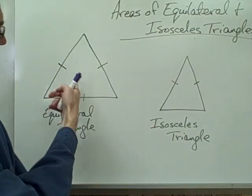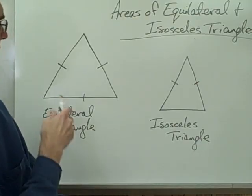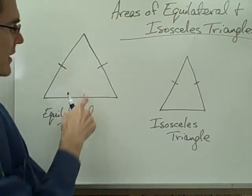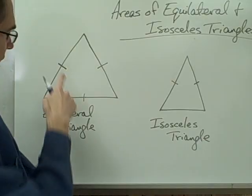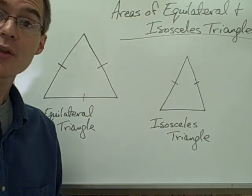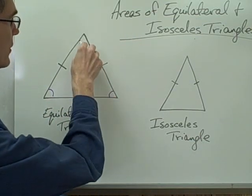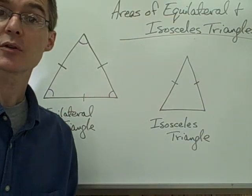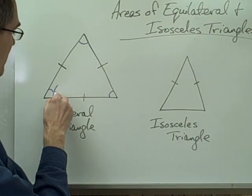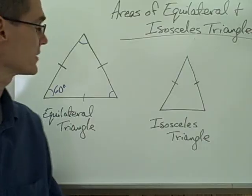Let's take a look at this picture right here — it's an equilateral triangle. I know that all three of the sides are congruent, and I've got those marked here with the congruence marks. I also know that all three angles are congruent, and not only are those angles congruent, I also know the measure of those angles: each one of these angles is 60 degrees.